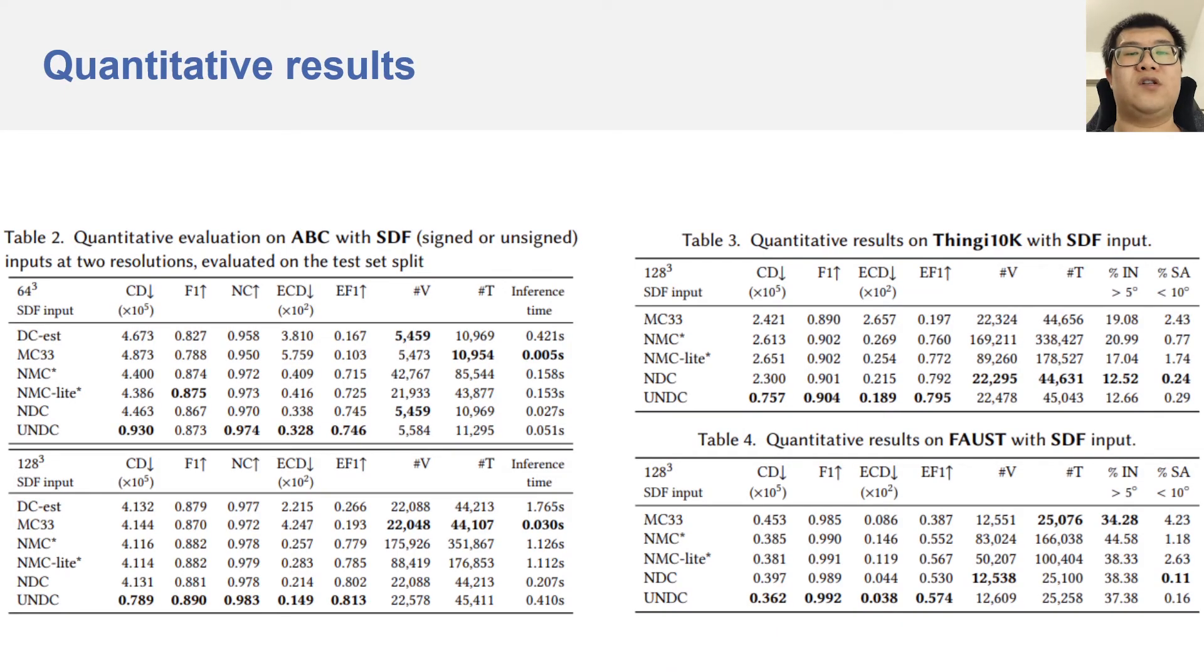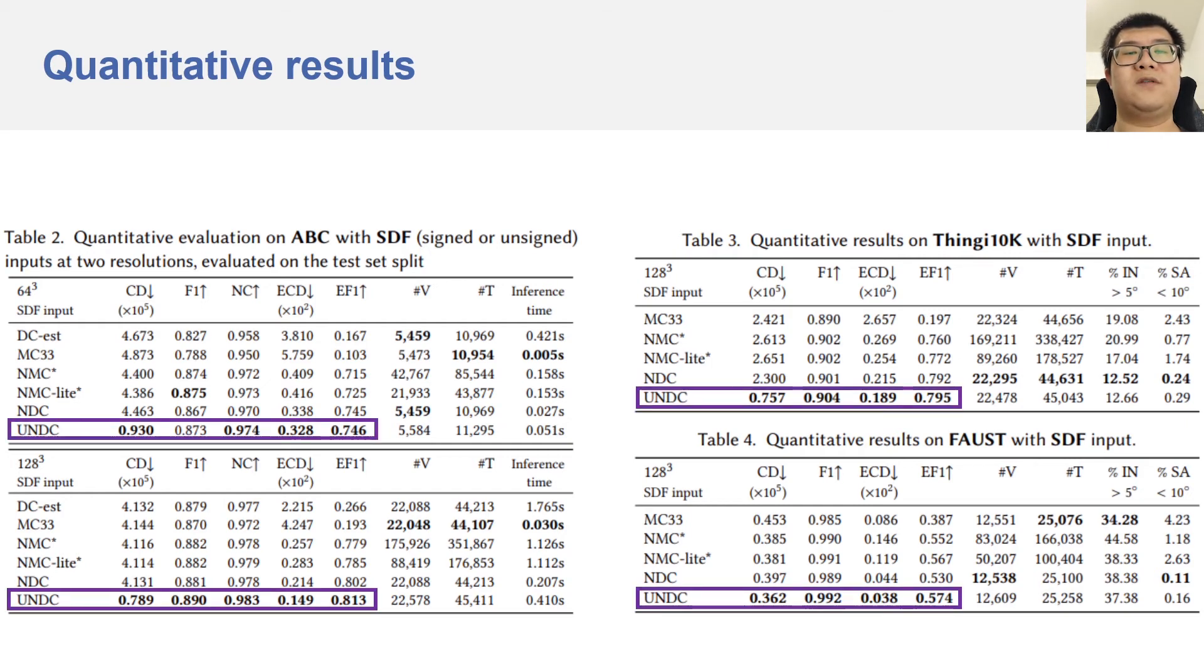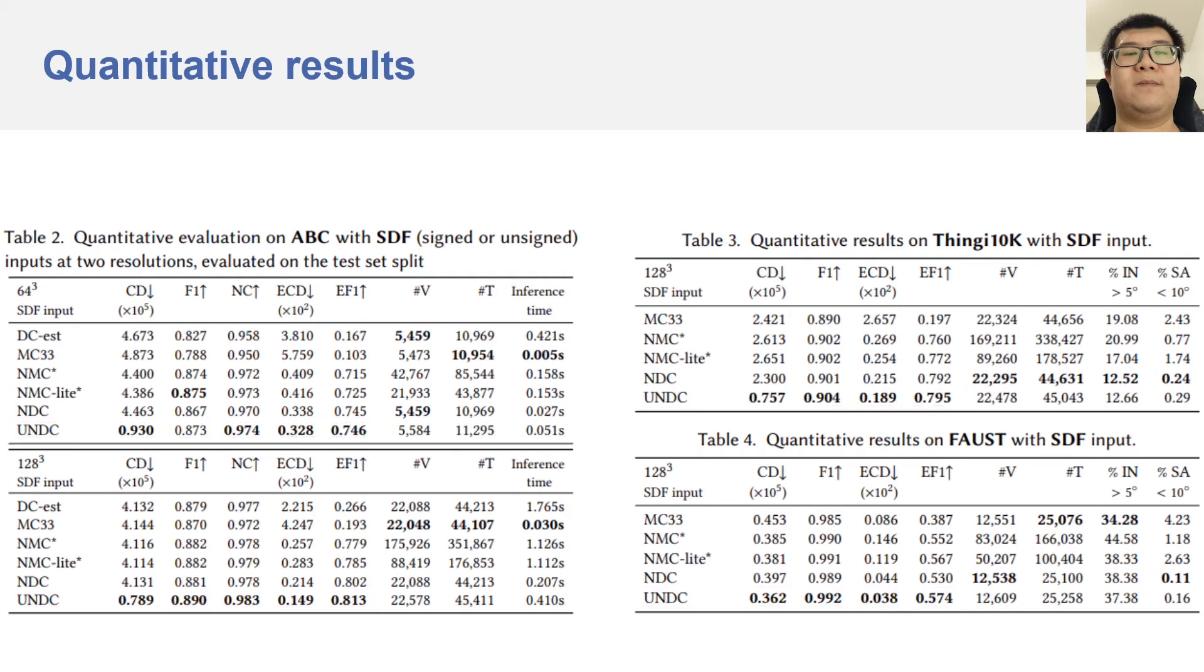Here are quantitative results for three testing datasets with two different input resolutions. UNDC outperforms all other methods in reconstruction quality, as reflected by Chamfer distance, F-score, and normal consistency. UNDC also outperforms other methods in sharp feature preservation, as reflected by ECD and EF1, which are Chamfer distance and F-score defined on sharp edges. NDC and UNDC produce similar amounts of vertices and triangles compared to classic dual contouring and marching cubes, which are significantly fewer than those of NMC. Finally, the inference speed of NDC and UNDC is much faster than NMC, although they have the same backbone network.